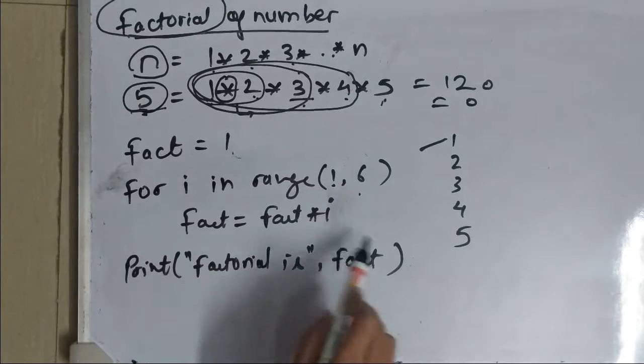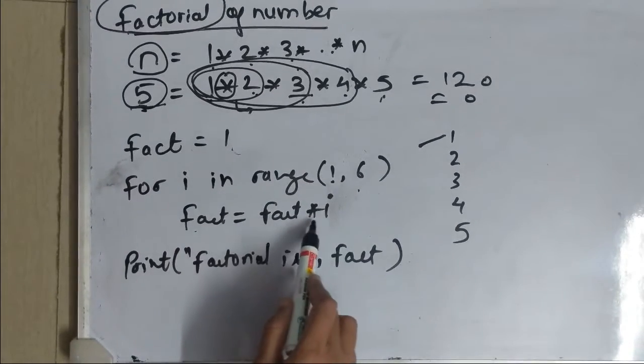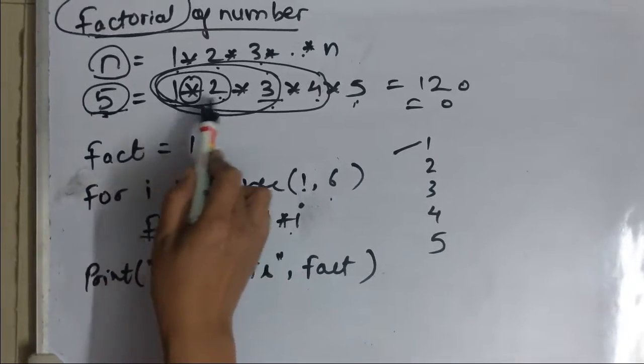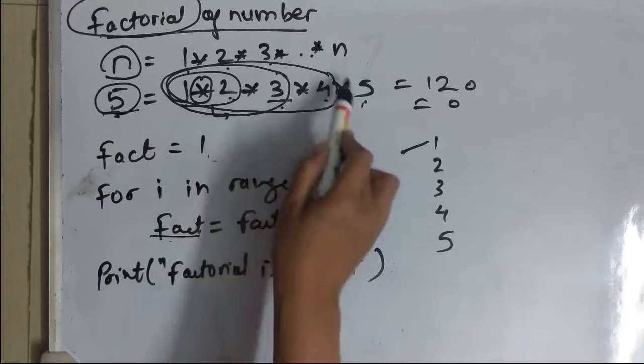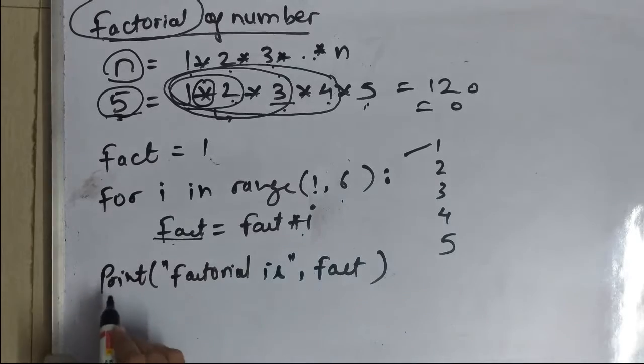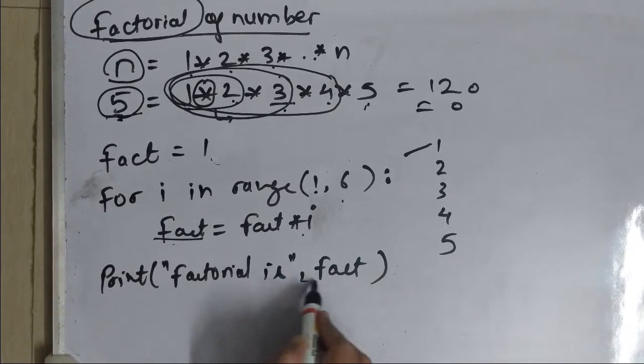Now the statement I have written in the loop is fact is equal to fact into i. What fact is going to do is it is going to store all the products of previous answers, all the answers of previous products.